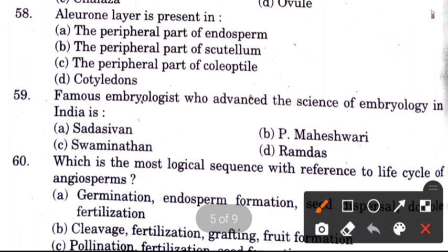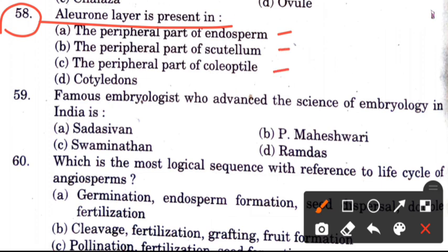Question 58: The aleurone layer is present in — options are the peripheral part of endosperm, peripheral part of scutellum, peripheral part of epithelium, or cotyledon. The answer is A, the peripheral part of endosperm.